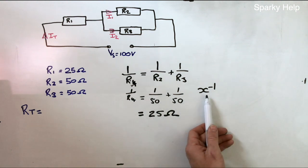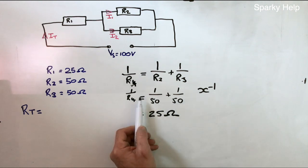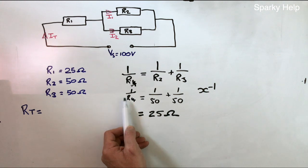But again, if we do the x to the minus 1, so that's 50, x to the minus 1, plus 50, x to the minus 1, equals x to the minus 1, your answer, that will give you your 25 ohms.